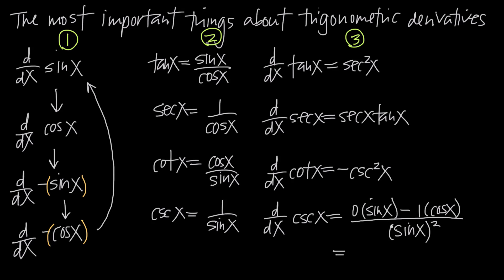Now we simplify. Zero times sine of x is 0. We have 1 times cosine of x, which is just cosine of x. So we end up with negative cosine of x in the numerator and sine squared of x in the denominator.